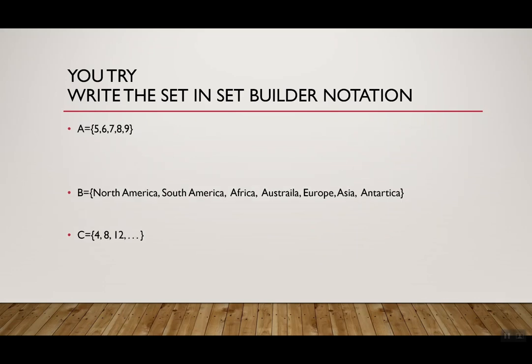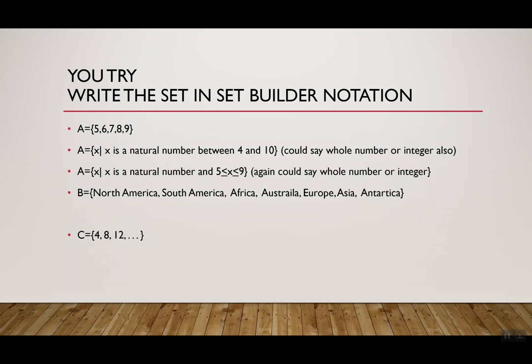So let's look at A. So A, again, I wrote a couple different ways here for you. Could be the set of all x where x is a natural number between 4 and 10. You could also say a whole number or integer. That would work too. And I chose to use the word between on this one. So I went one lower and one higher. If I didn't want to say that, I could say A is a set of all x where x is a natural number and x is greater than or equal to 5 and less than or equal to 9. Again, you could say a whole number or integer as well. Just make sure you get used to that idea of telling me what kind of number you have and then tell me where to start and stop.